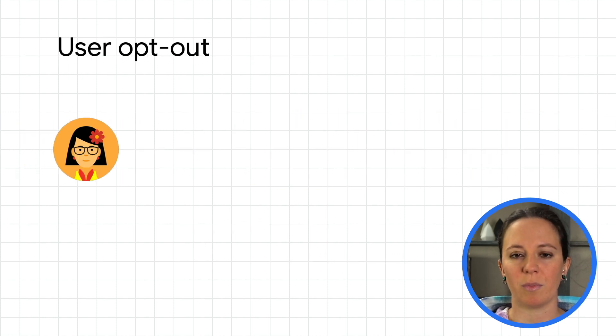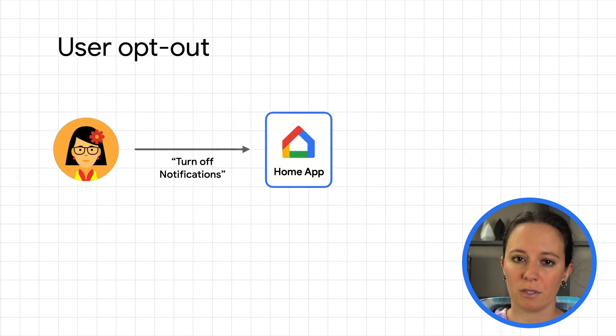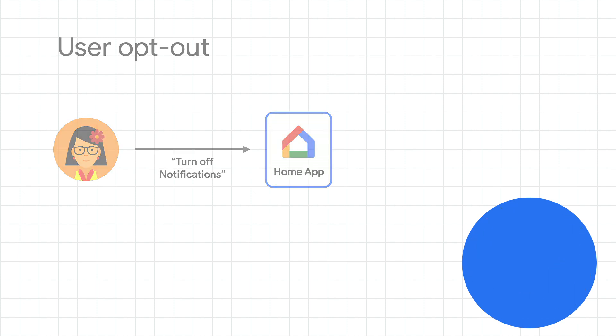Users will have the ability to turn off all notifications from the Google Home app. Check out the docs and samples for more details on how to get started with notifications and follow-up responses in your Smart Home action.